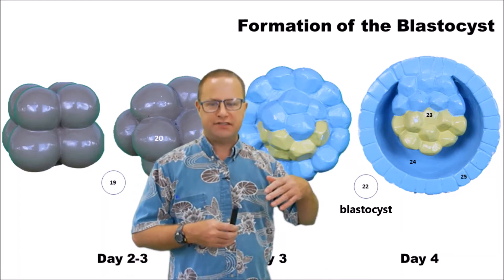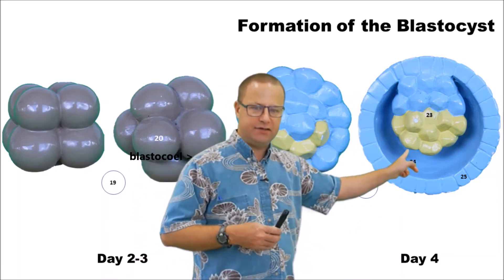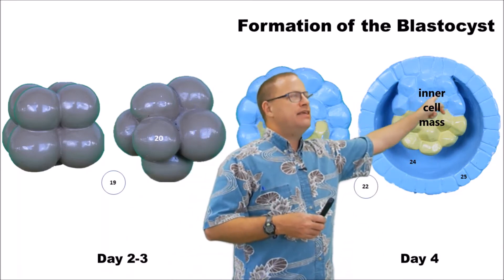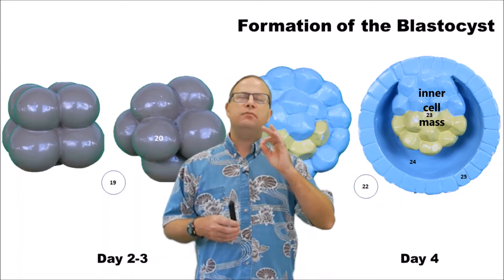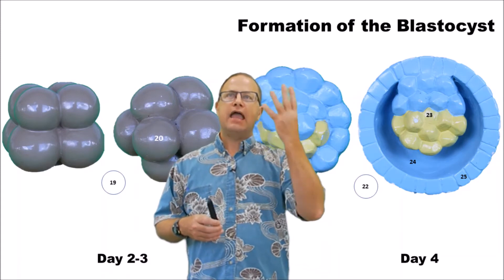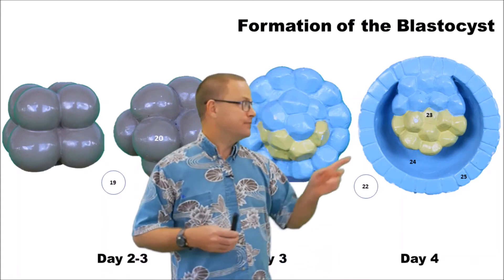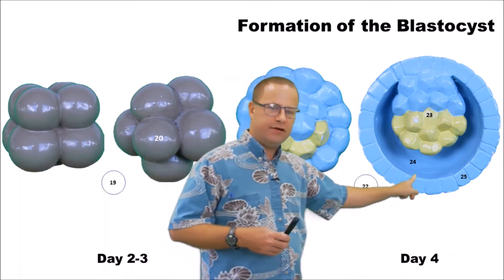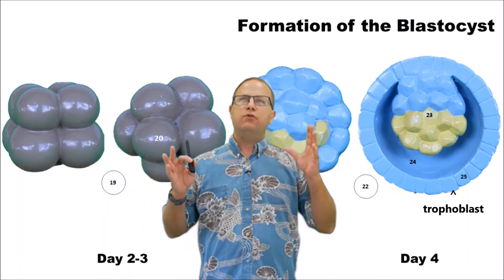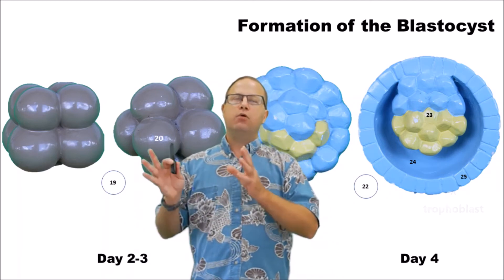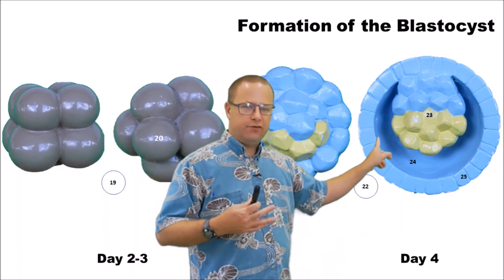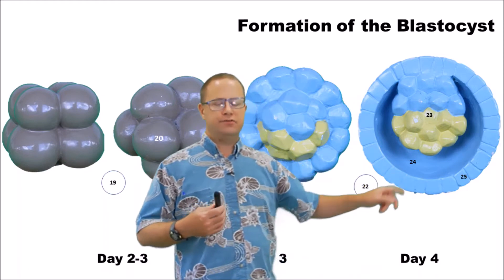Now this hollow ball of cells has something called a blastocele, which is the hollow cavity right here. It also has something called the inner cell mass. The inner cell mass is important because this is what will become the embryo, and some of the extra-embryonic membranes like the amniotic sac and the yolk sac. And then surrounding that whole thing we have something called the trophoblast. The trophoblast is a ring of cells that will eventually become the embryo's portion of the placenta — tropho means to feed, so this trophoblast helps to nurture the embryo as it grows and divides.